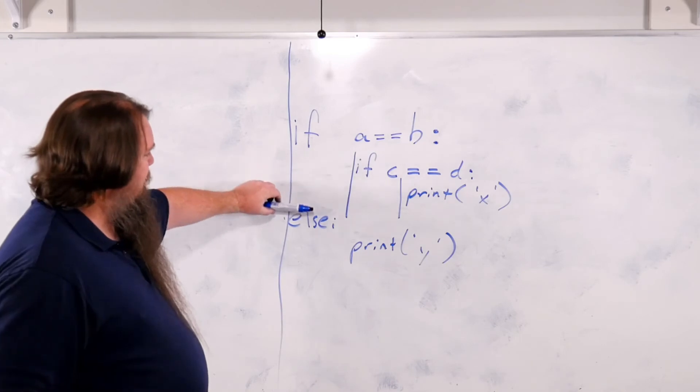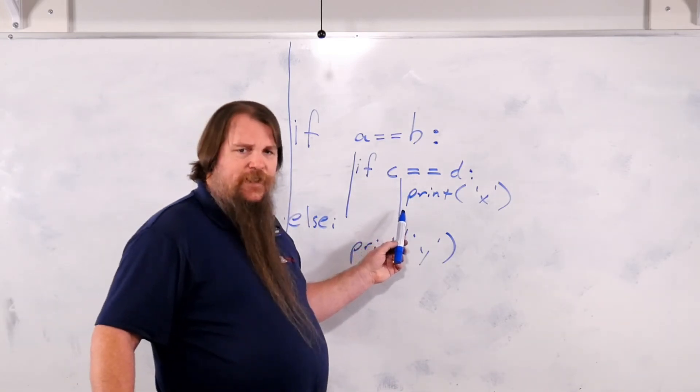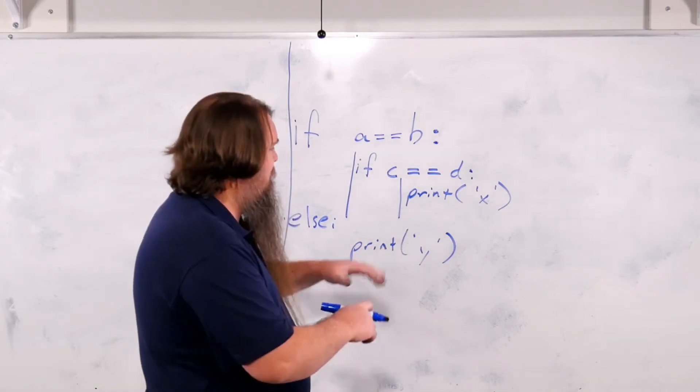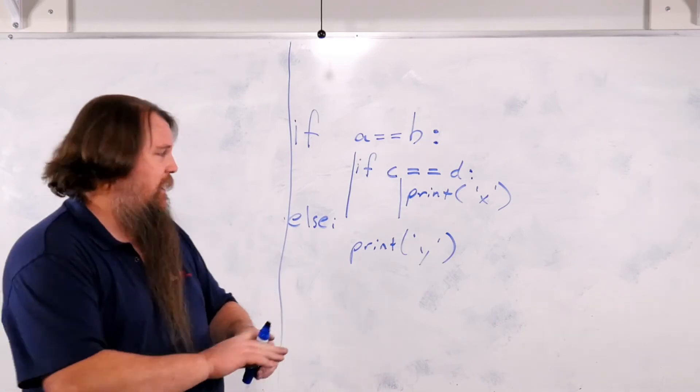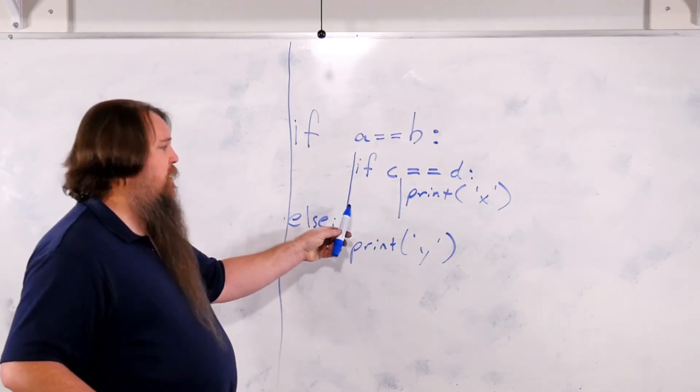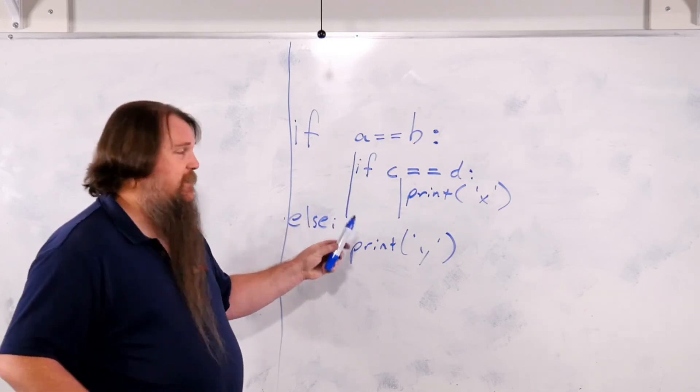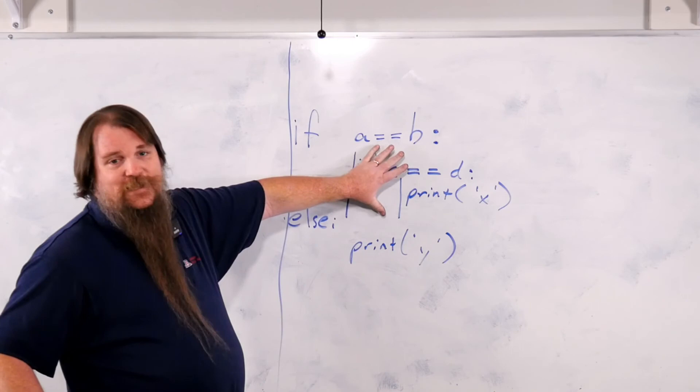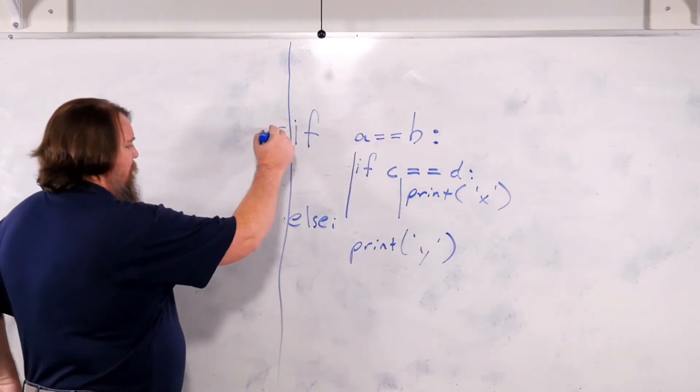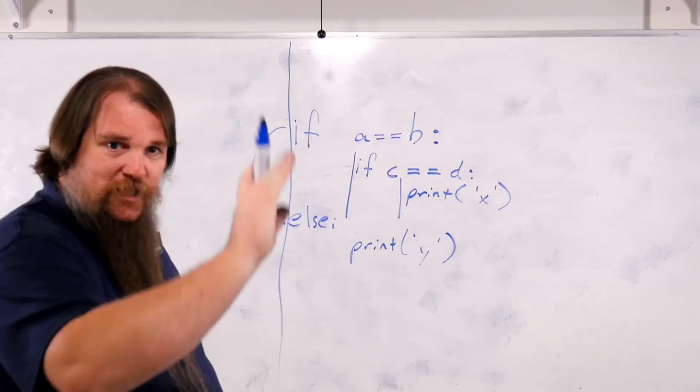Now it hits this else statement and it says, huh, we're not at this deep indentation level anymore. Okay, well, I guess this if block has ended and it goes back out to this level. Oh, we're not there either. So what it says is that this whole if block has ended as well. So this if is connected to this else. And we know that because they're lined up together.